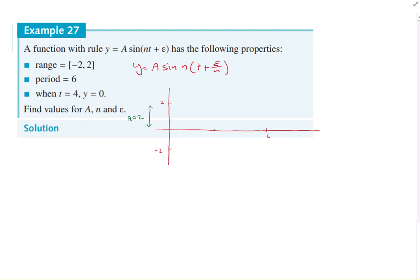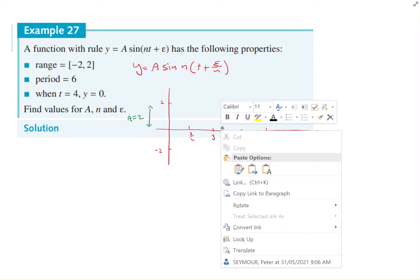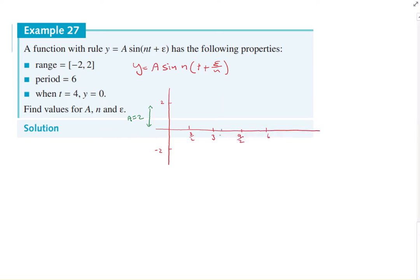Been very nice how they've given us whole numbers. What's that? One and a half, three, four and a half. So four and a half is, what's that? Nine on two. Okay. Right. So, and we know when t equals 4, y equals 0. So we'll mark in when t equals 4, y equals 0.